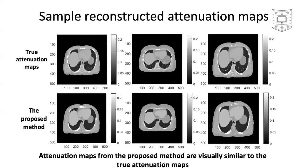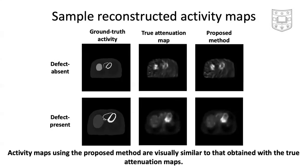Here we show some estimated attenuation maps. We observe that the attenuation maps from the proposed method were visually similar to the true attenuation maps. We also present some reconstructed activity maps, and we can find that activity maps from the proposed method were visually similar to those obtained with the true attenuation map.